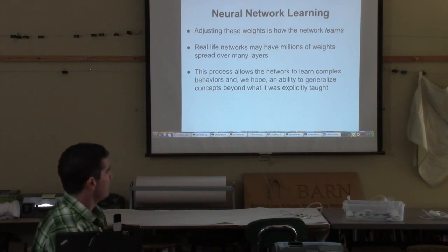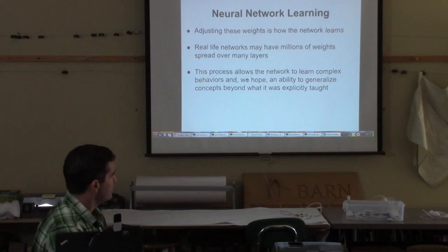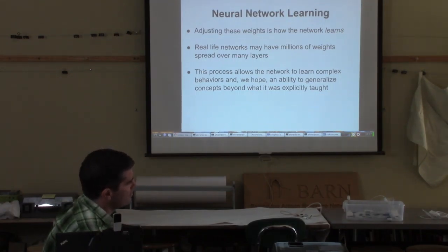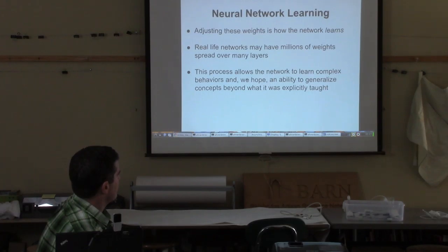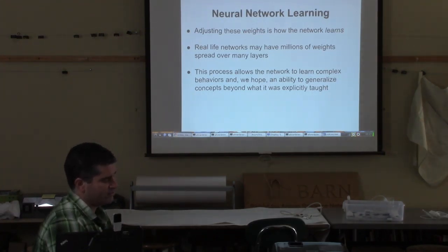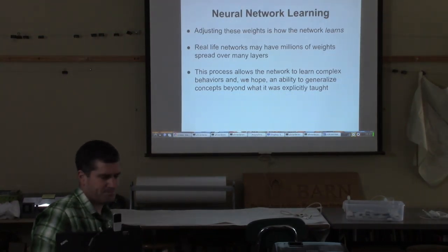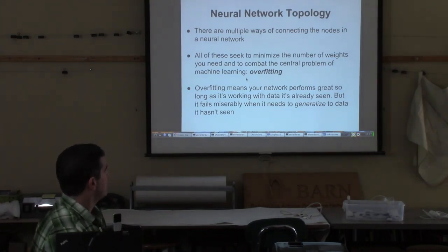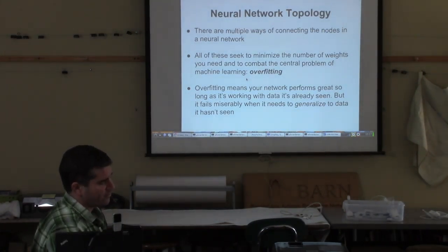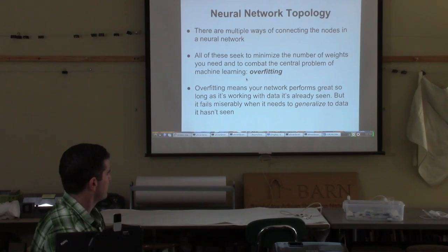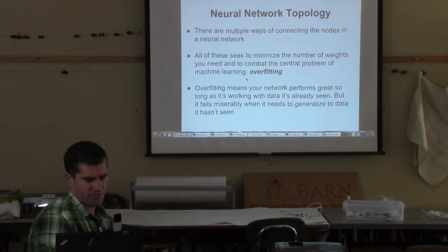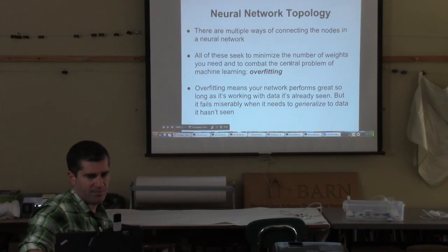In real life, a network may easily have millions of different weights that have to be adjusted — that's why machine learning is typically computationally intensive. But the beauty of it is it allows the machine to learn increasingly complex behaviors. Because it's computationally expensive, you want to use as few weights as you can get away with.